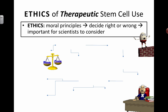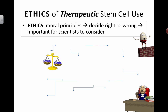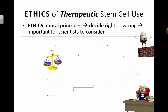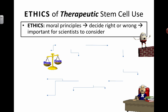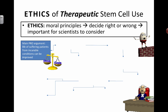Ethics are moral principles where you have to decide if something is right or wrong. It's a very human endeavor, and it's important for scientists to consider because everything that scientists do can often have consequences that could be good and bad. So when talking about stem cells, this is a perfect place to discuss this.